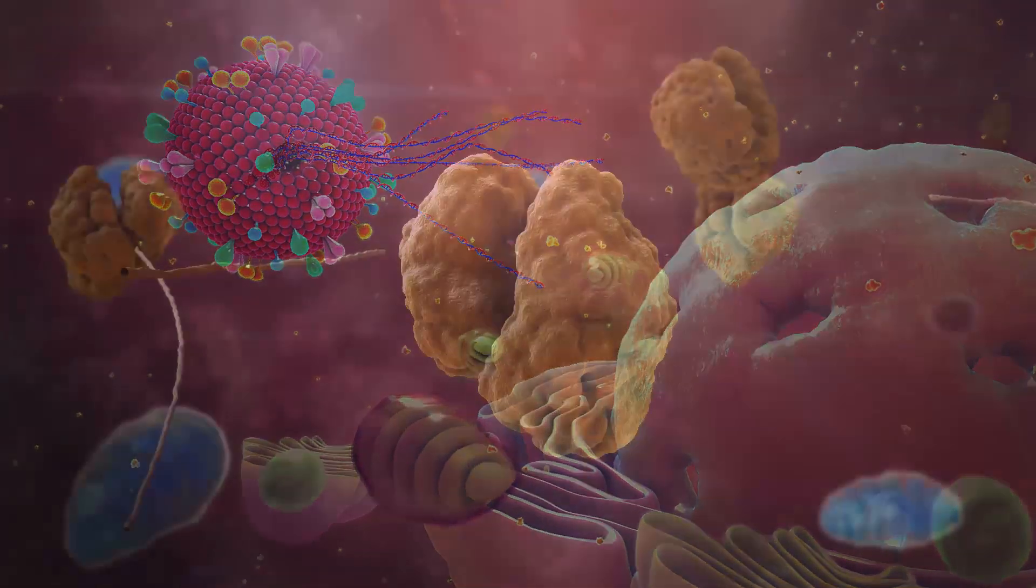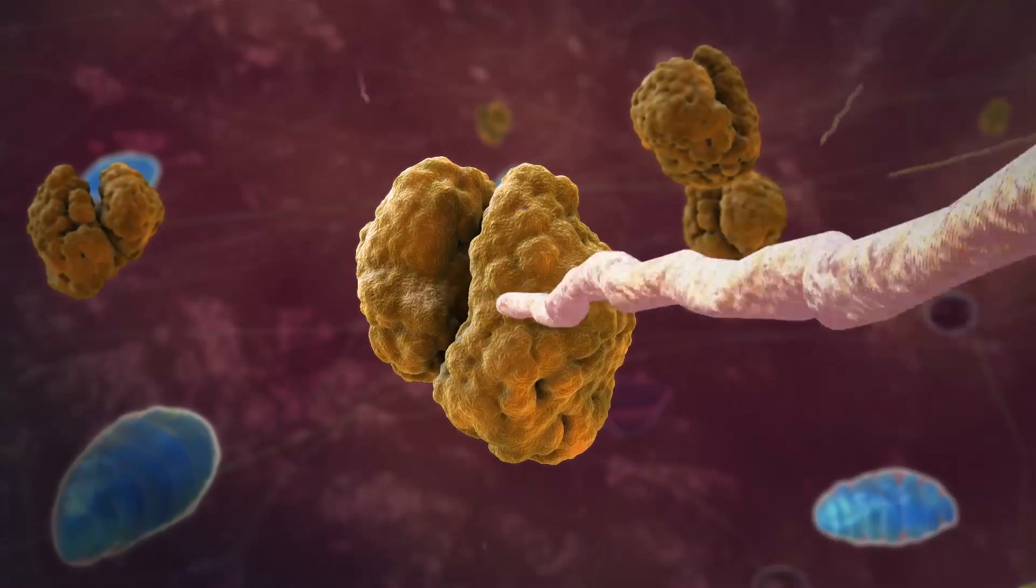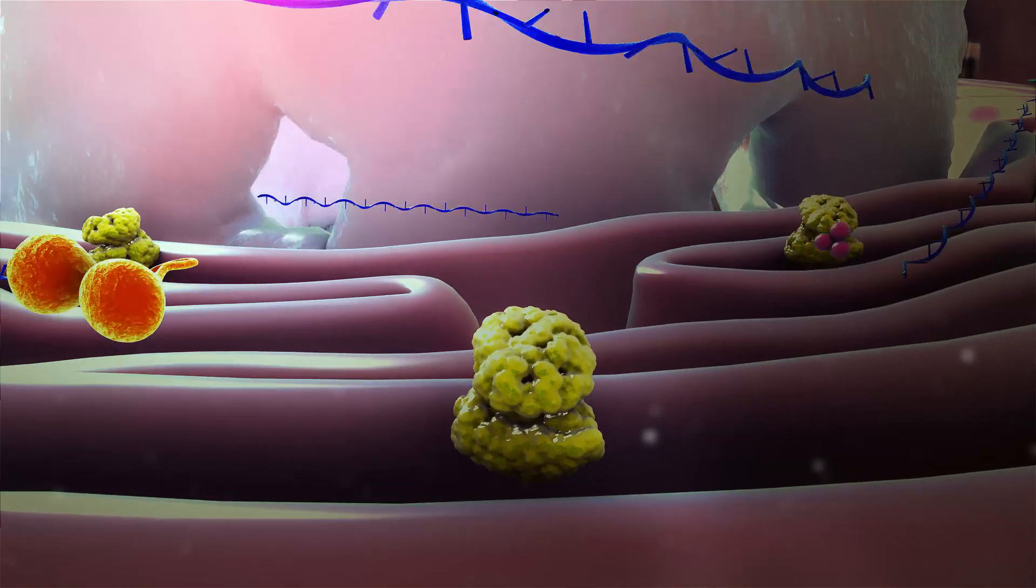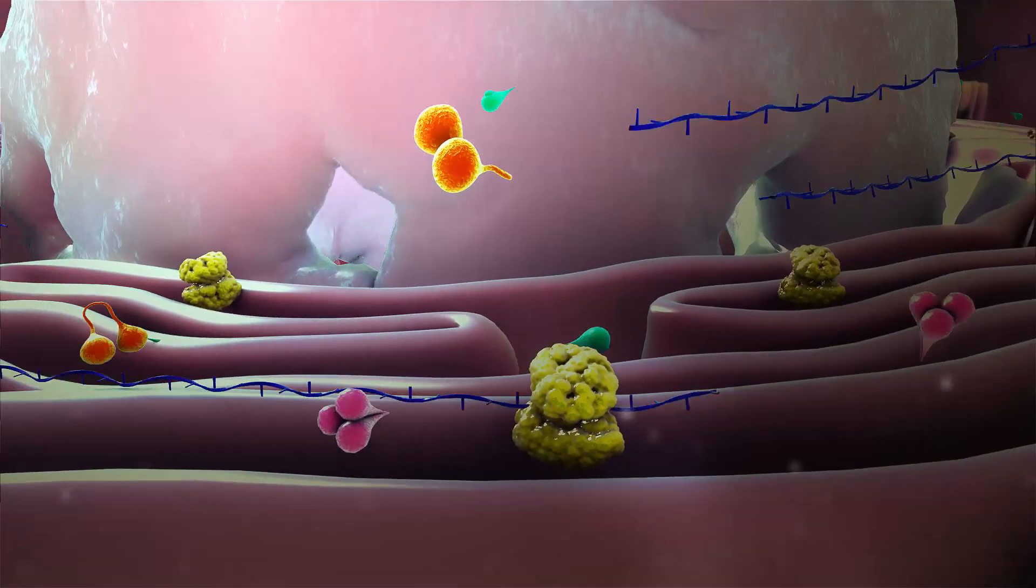The virus hijacks the cell's machinery to replicate the RNA and proteins, and uses the endoplasmic reticulum to form its M-protein outer layer and the all-important S-protein.